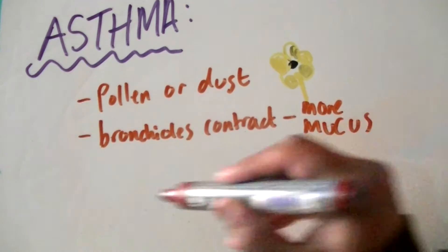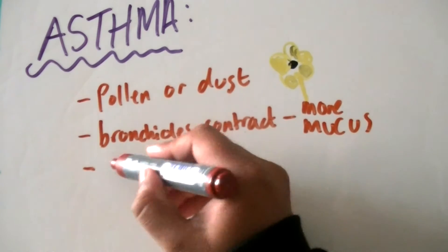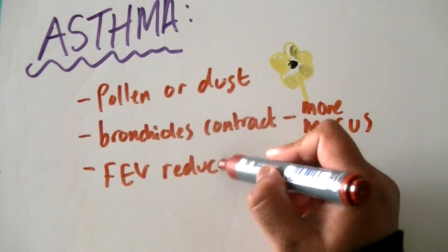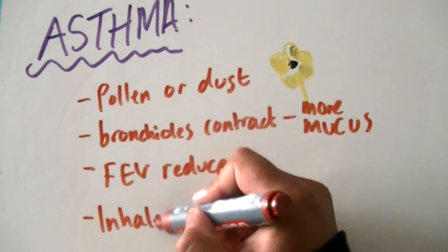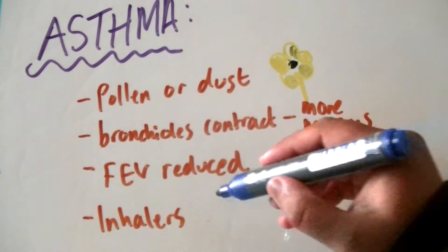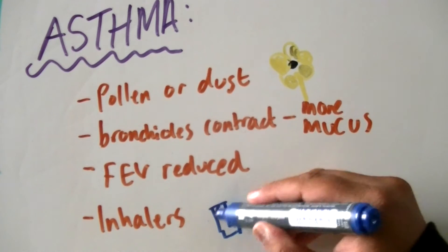Symptoms include wheezing, tight chest, and shortness of breath. They can often be relieved by drugs, often inhalers, which cause the muscles in the bronchioles to relax, opening the airways.